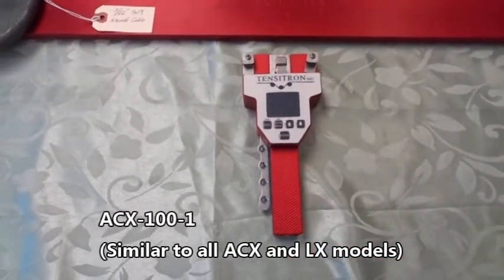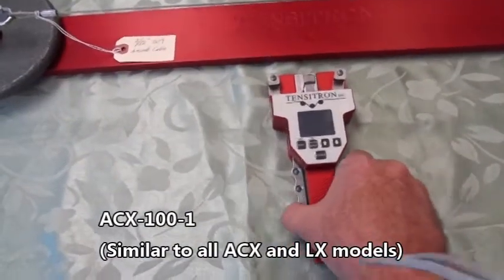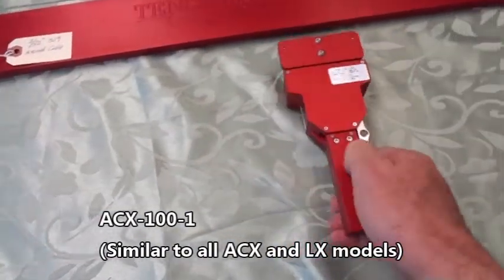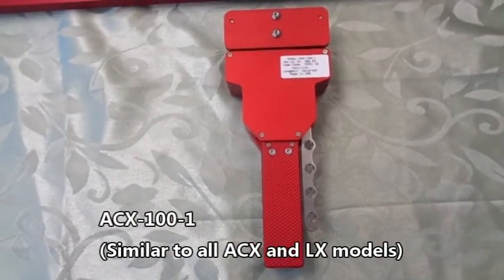Today specifically we are showing the ACX model 100-1. On the back of the instrument is a label showing the model number and serial number of that instrument.